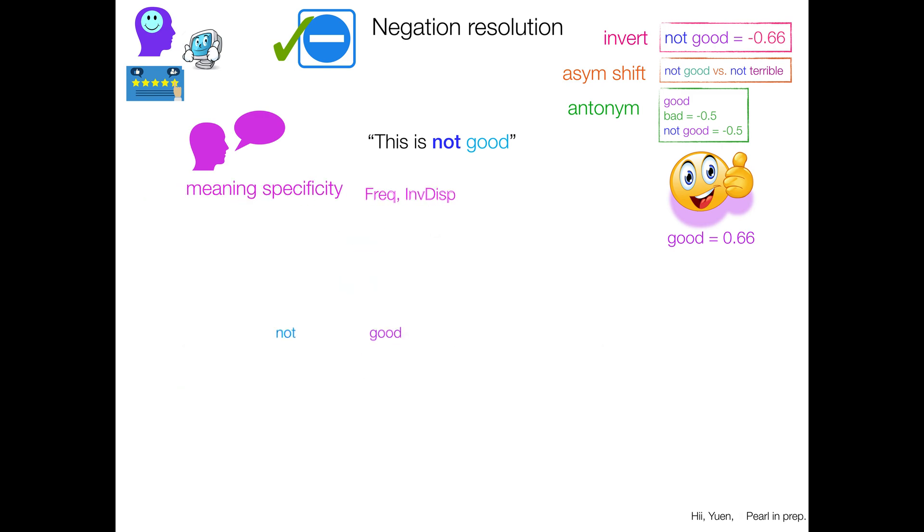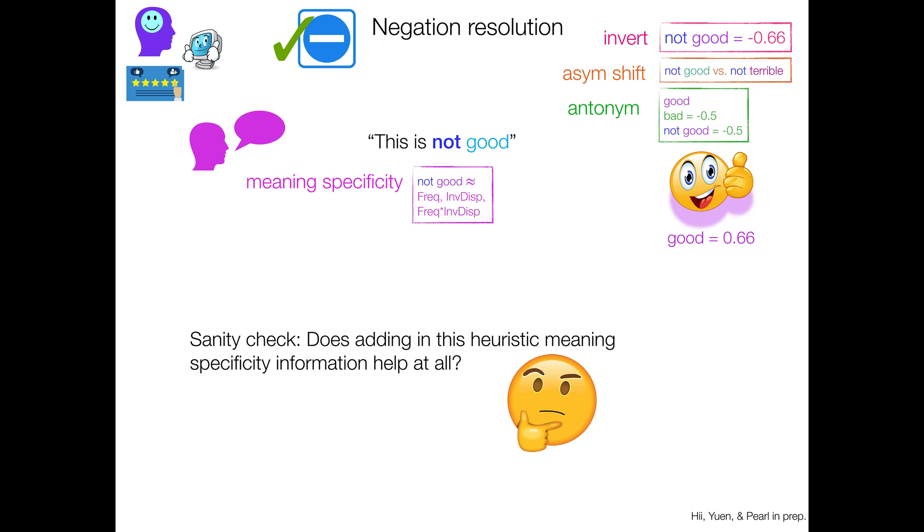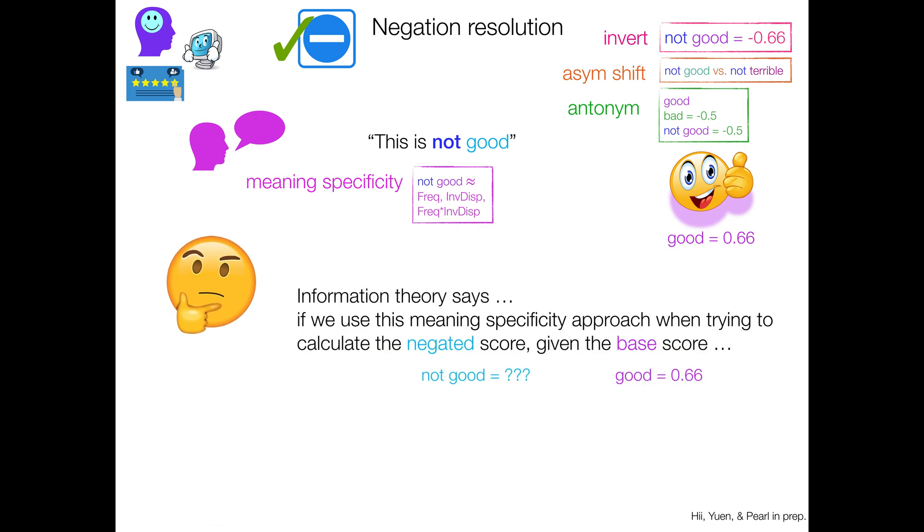And so something we did was, okay, let's do a sanity check. Does adding in this heuristic meaning specificity information help us at all at this negation resolution, like getting that negated score? And information theory says that if we use this meaning specificity approach, that is these heuristics of frequency and inverse dispersion in their interaction, when trying to calculate the negated score, given the base score, good things happen.